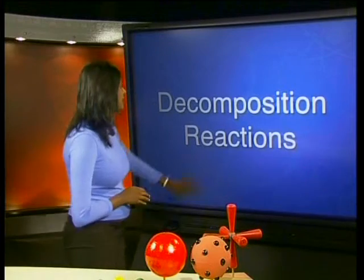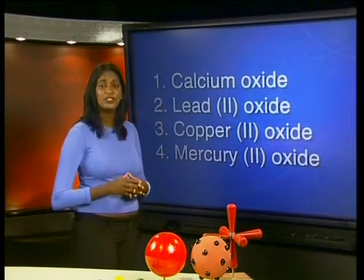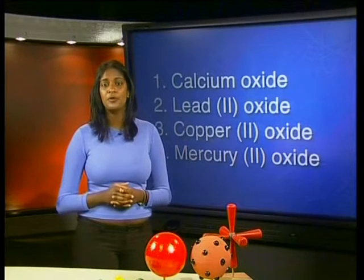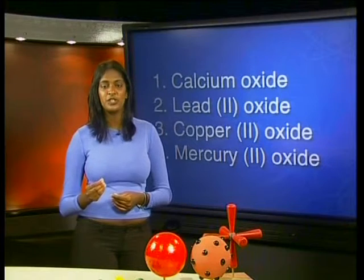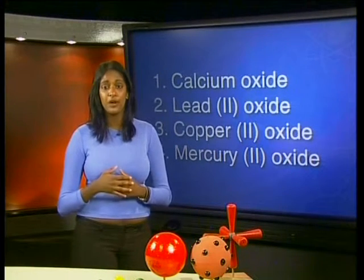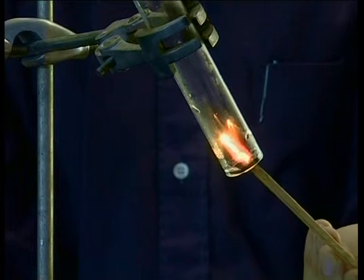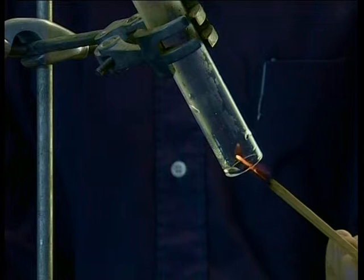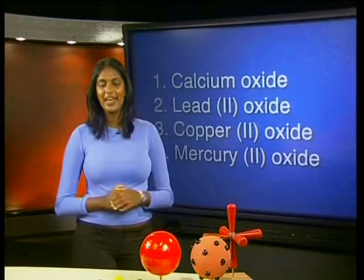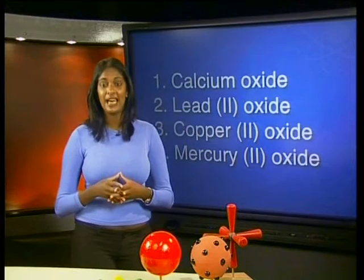These are the oxides we will be testing: calcium oxide, lead 2 oxide, copper 2 oxide, and mercury 2 oxide. These compounds are all combinations of a metal and oxygen, so if they separate into their component elements, we can expect oxygen to be a product of the decomposition reaction. Can you still remember how we tested for oxygen? We found that if you bring a glowing splint close to the mouth of a test tube containing oxygen, the glowing splint starts to burn — this is a positive test for oxygen. Now that we know how to test whether oxygen is being given off, we can go to the lab.